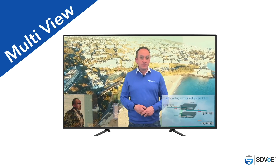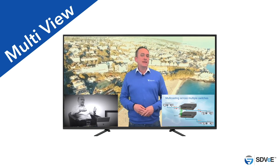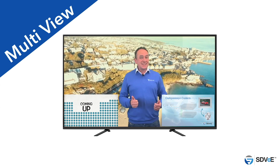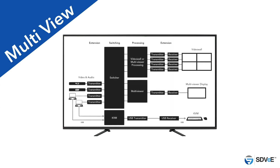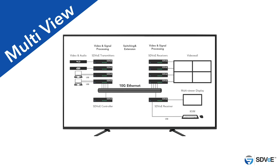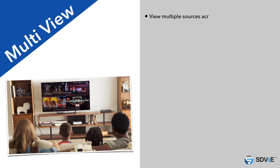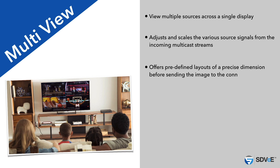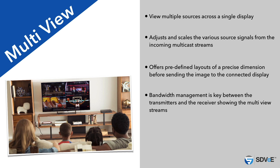Finally, you may have heard of the term picture in picture — we call this multi-view. Put simply, it's the ability to show multiple independent video feeds on a single display. The image processing required for multi-view means that to achieve this with a matrix switch topology, you would need additional and expensive controllers placed in line. In the multi-view application, the receiver subscribes to the multicast addresses of the desired sources, and these sources usually have different resolutions and frame rates. The multi-view application has the ability to adjust and scale the various source signals, placing them into a predefined layout of a precise dimension, and the scene is then sent out to the connected display. The key to successfully implementing a multi-view layout is to correctly manage the network bandwidth, both at the receiver where the multiple streams are received, and the transmitter where both the native and scaled down streams must coexist.